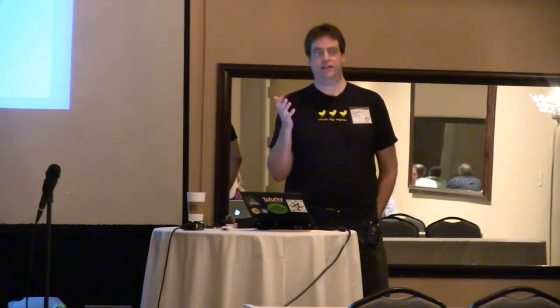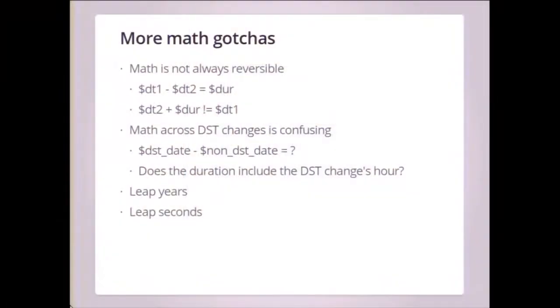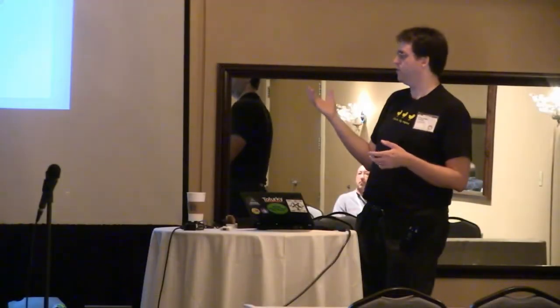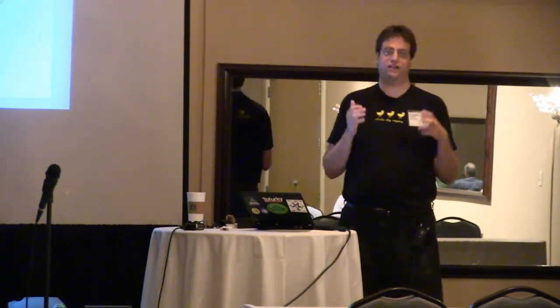Some more gotchas: the math is not reversible. If I subtract two DateTimes to get a duration, then add that duration back to the second DateTime, I might get a different DateTime than I started with. This is explained at great length in the docs. If we subtract a DST DateTime from a non-DST DateTime in the same time zone, it's very arbitrary what the result should produce — does the duration include the DST change hour or not? Leap years and leap seconds can also produce occasionally surprising results.